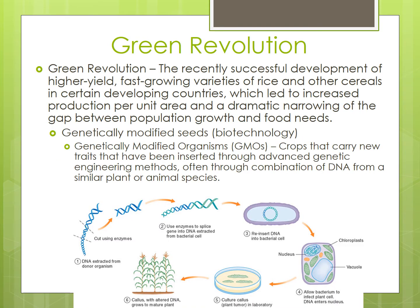The increase in yields was accelerated by the Green Revolution, which was the recently successful development of higher-yield, fast-growing varieties of rice and other cereals in certain developing countries, which led to increased production per unit area and a dramatic narrowing of the gap between population growth and food needs.